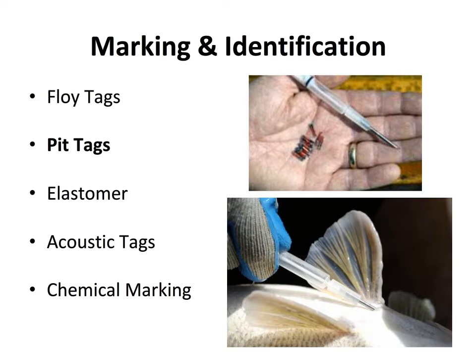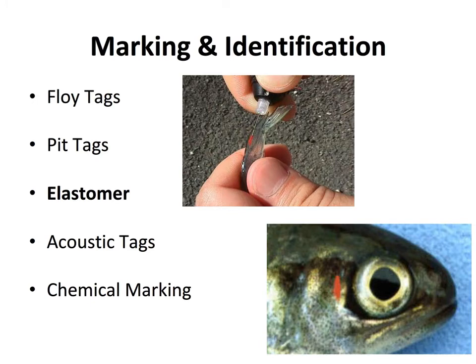Another tag you're probably familiar with is the PIT tag or microchip tag — similar to or the same as those used in cats and dogs. PIT tags can be injected into the peritoneum or between the pelvic fins. They require a transponder to scan the fish, so they're often used in laboratory research or in hatcheries where fish are released into the wild and pass by a transponder to give us an idea of how many are entering the environment. One drawback is that PIT tags are quite expensive, and if properly placed, are not visible externally.